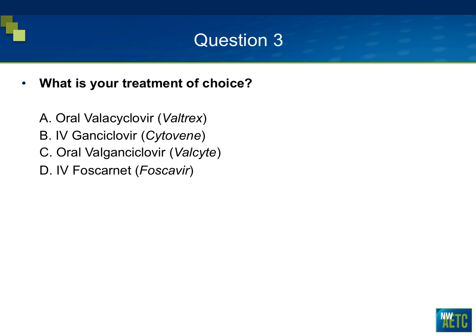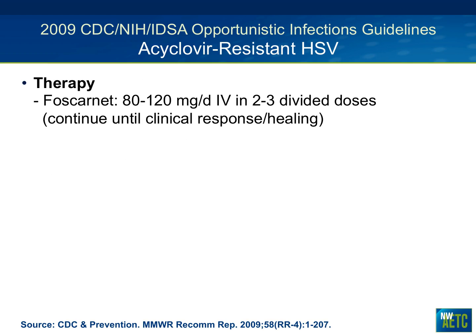Now that we have this individual with a chronic facial lesion not responding to acyclovir and a history of recurrent herpes simplex, what would you treat with? Would it be A, oral valacyclovir? Would it be B, IV ganciclovir? Would it be C, oral valganciclovir? Or D, IV foscarnet? The correct answer is D, IV foscarnet.